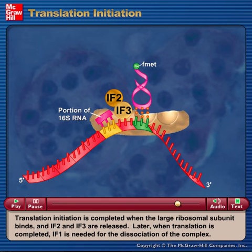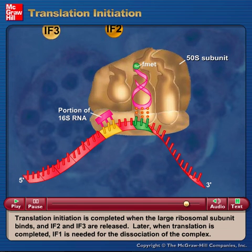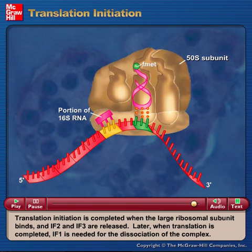Translation initiation is completed when the large ribosomal subunit binds and IF2 and IF3 are released. Later, when translation is completed, IF1 is needed for the dissociation of the complex.